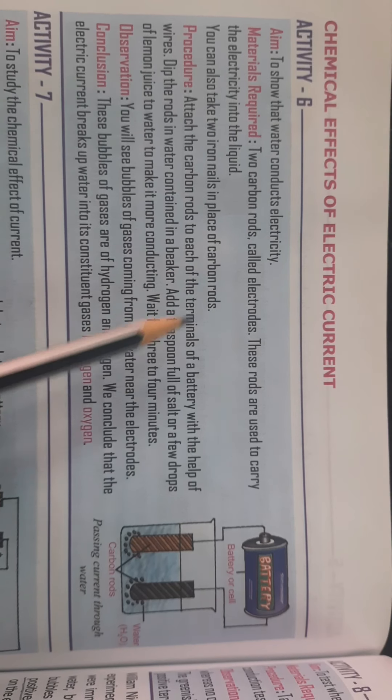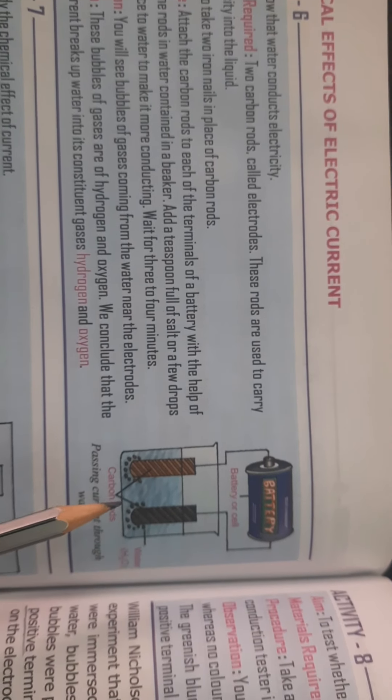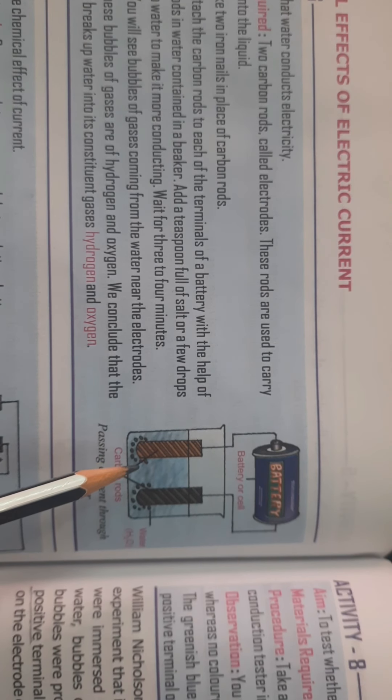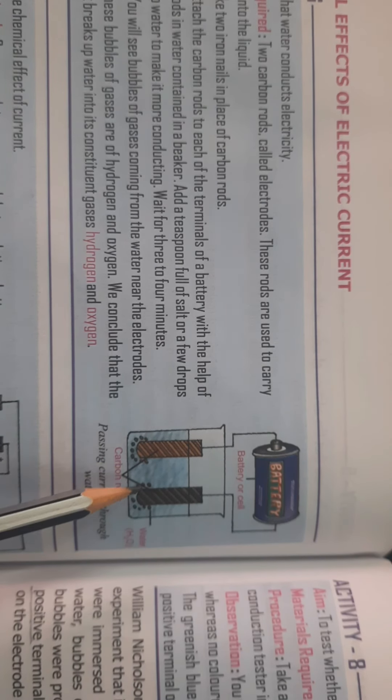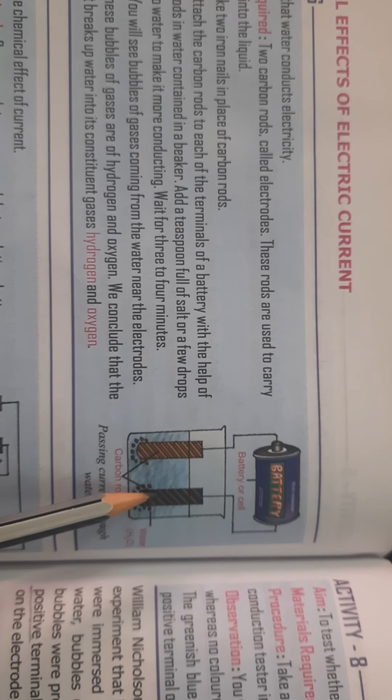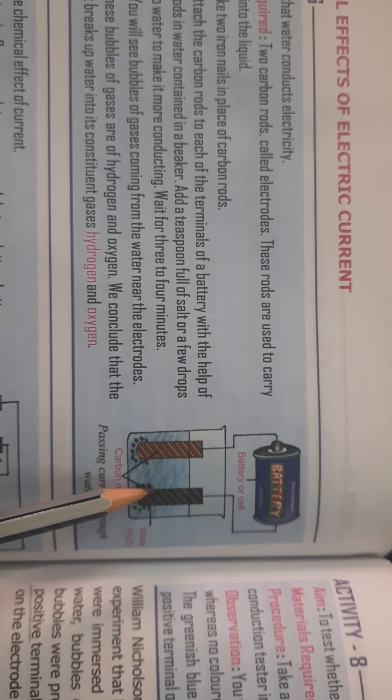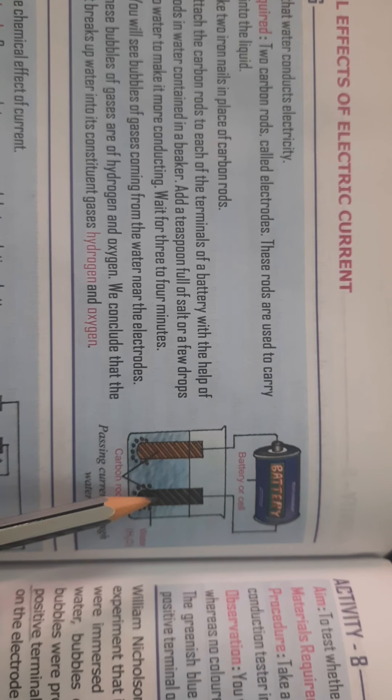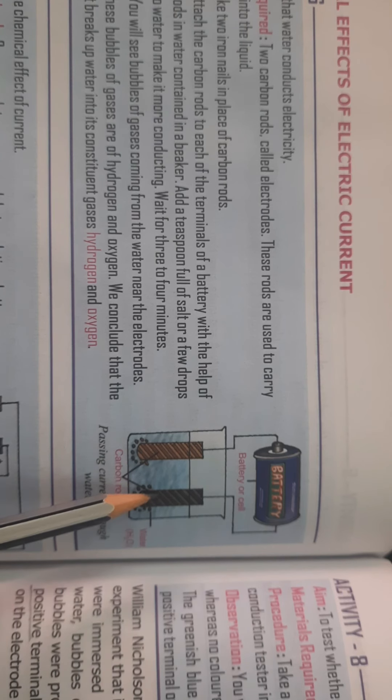You have to take two carbon rods, and instead of two carbon rods you can even take two iron nails. These carbon rods will be called as the electrodes, and they are called electrodes because they are used to carry the electricity into the liquid.